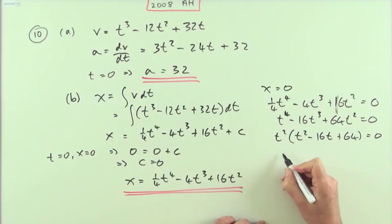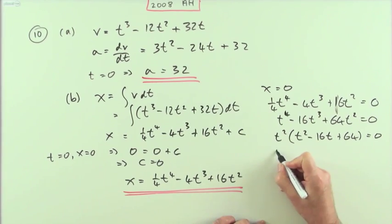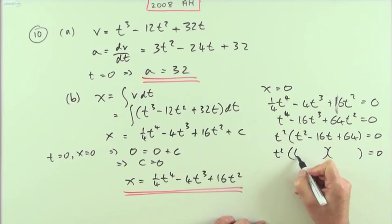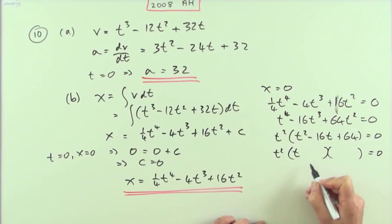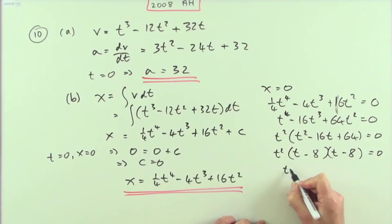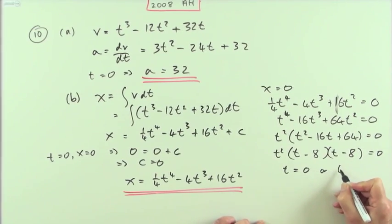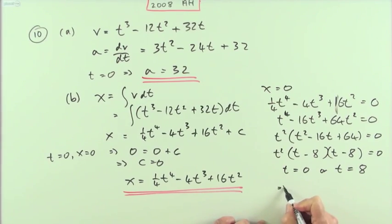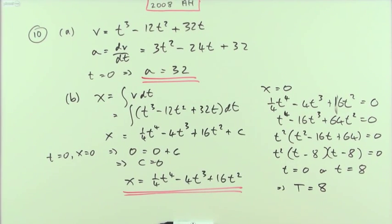Factorizing, I should have noticed that's a perfect square: minus eight times minus eight. So I've got t equals zero or t equals eight, which means the body must be returning at T equals eight. The question uses the capital letter T for that value, so T equals eight units — could be seconds, but t equals eight is all I need.